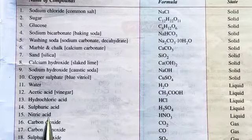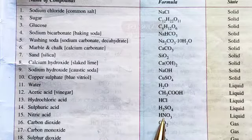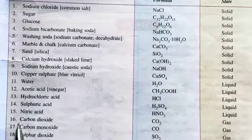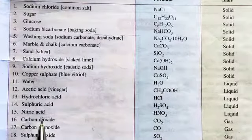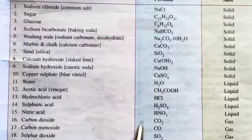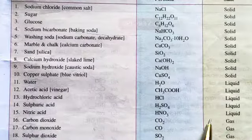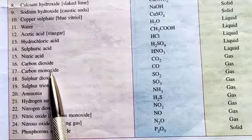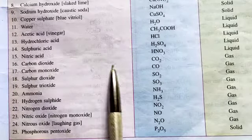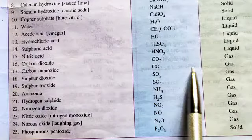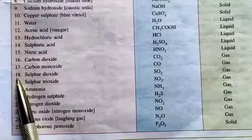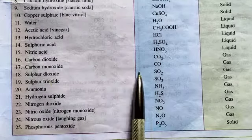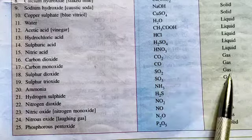15. Nitric acid — its formula is HNO3 and its state is liquid. 16. Carbon dioxide — its formula is CO2 and its state is gas. 17. Carbon monoxide — its formula is CO and its state is gas. 18. Sulphur dioxide — its formula is SO2 and its state is gas.